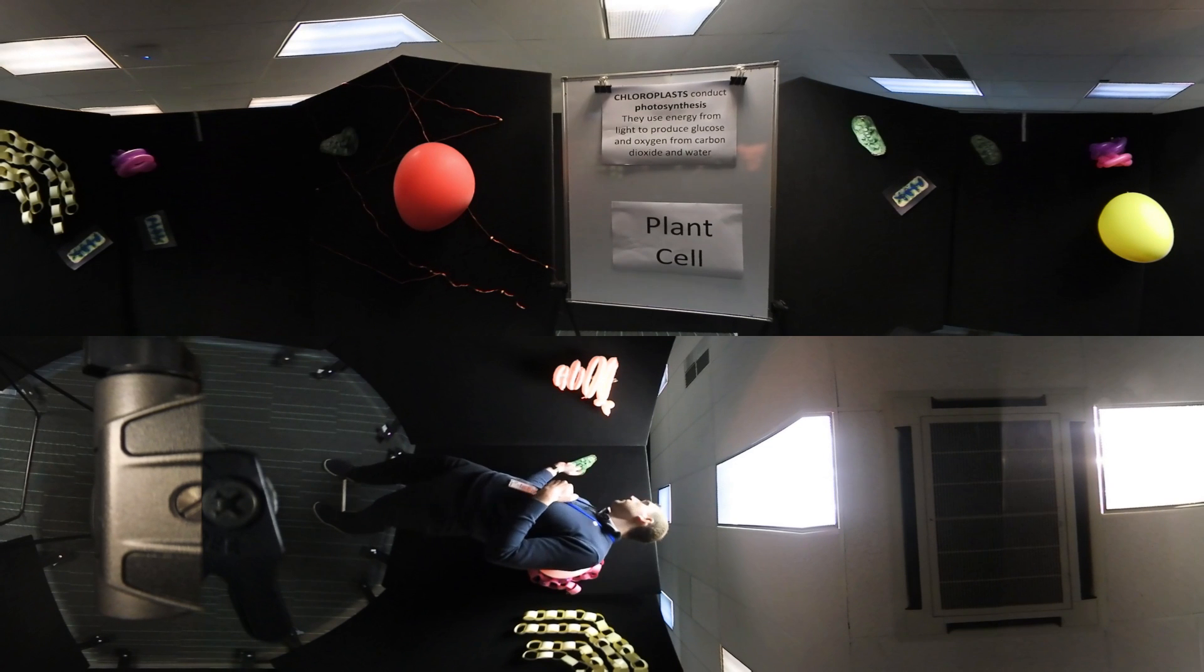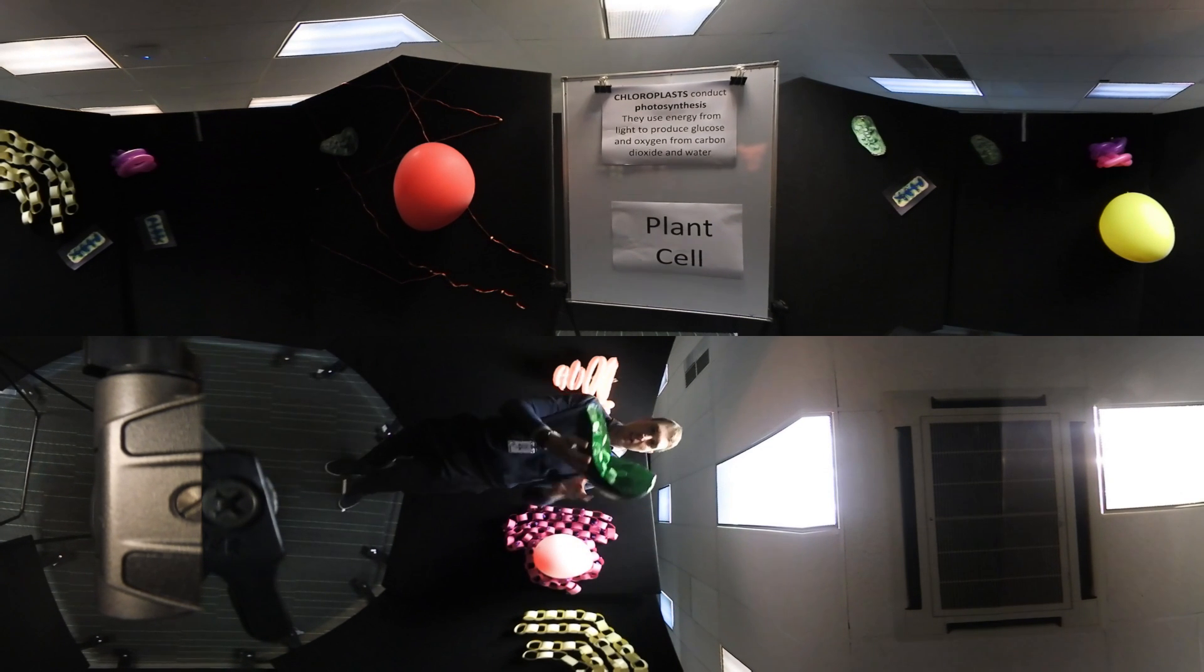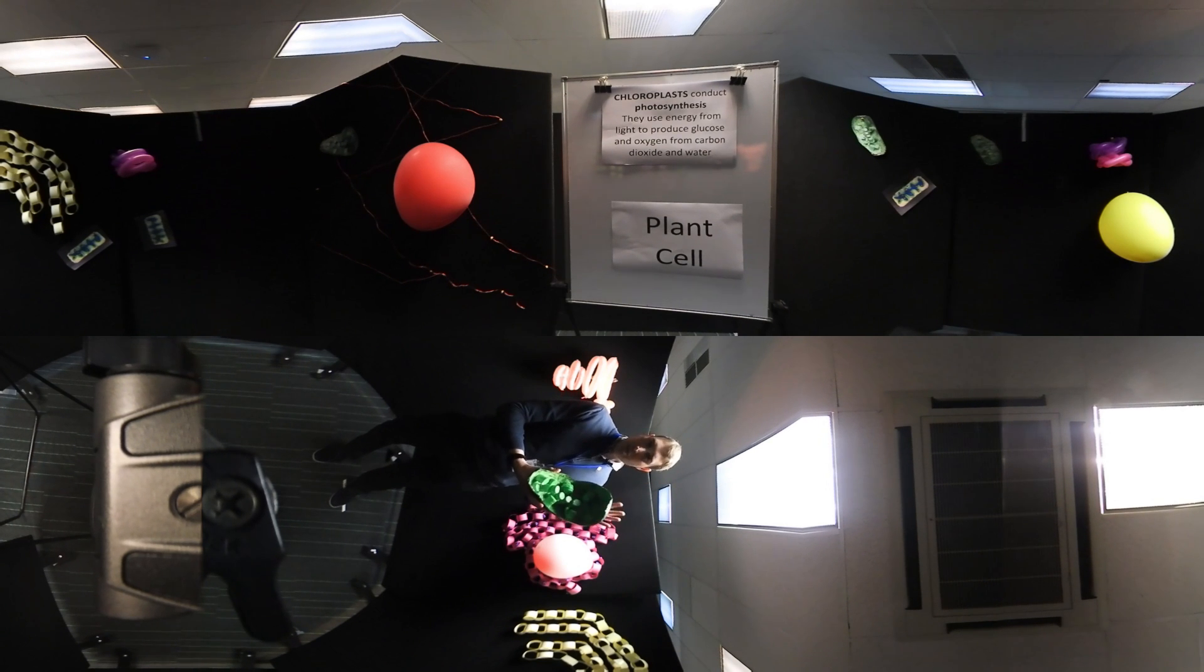I've got some chloroplasts over here. I've got one behind me. I've got one over there. I also have a large model here. It looks a bit like an avocado. The chloroplast is green because it contains a chemical called chlorophyll. And chlorophyll is really important in a process called photosynthesis.